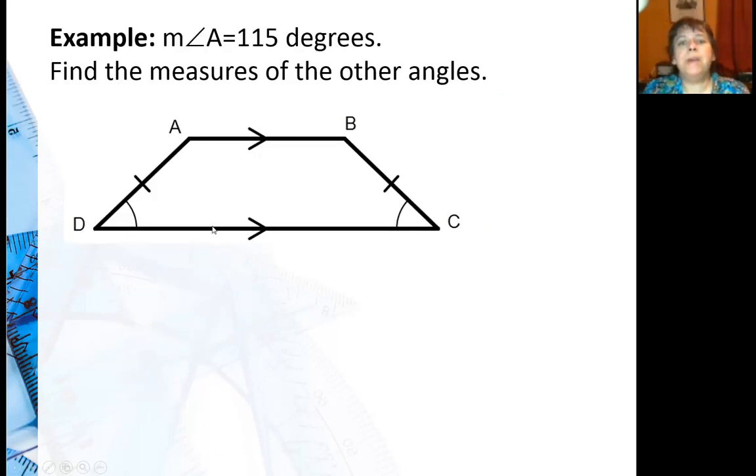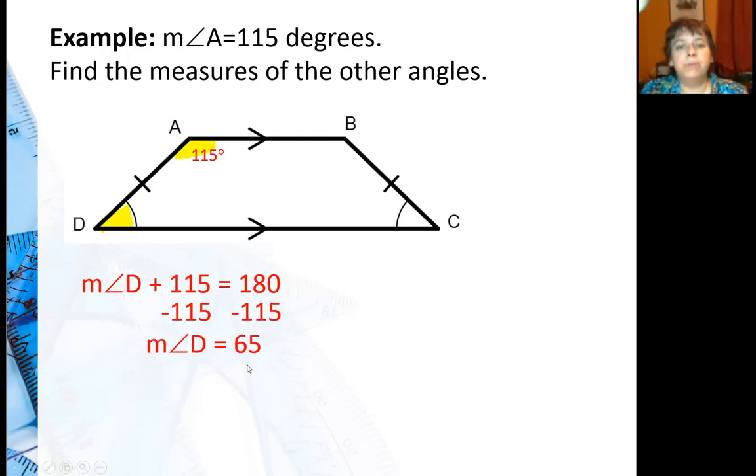Now we're going to find the measure of the other angles in this isosceles trapezoid. You can tell it's isosceles because the two legs are marked congruent and also because the two base angles are congruent. Now I'm putting the 115 degrees in for angle A and it is supplementary to angle D. Well, angle D plus 115 has to be 180, which makes angle D 65 degrees.